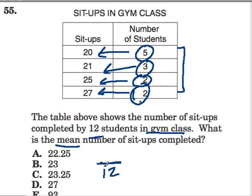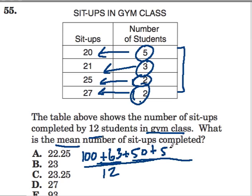We have to be careful because we don't just want to add up these numbers. We want to realize that five students could do 20 sit-ups, so our first five students totaled to 100. Then three students could do 21 sit-ups - that's 63 sit-ups done there. Two students could do 25, that's 50 sit-ups. And then two students could do 27, which is 54 sit-ups.